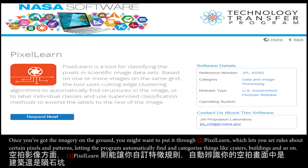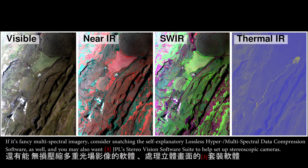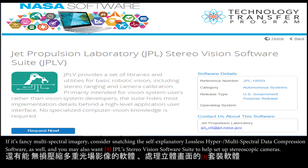Once you've got the imagery on the ground, you might want to put it through PixelEarn, which lets you set rules about certain pixels and patterns, letting the program automatically find and categorize things like craters, buildings, and so on. If it's fancy multispectral imagery, consider snatching the lossless hyper-multispectral data compression software, and you may also want JPL's StereoVision software suite to help set up stereoscopic cameras.